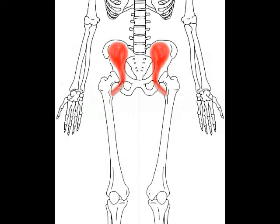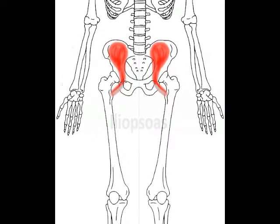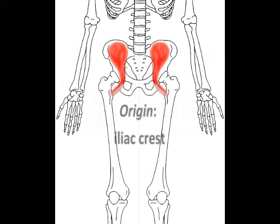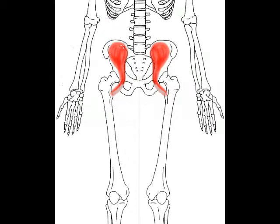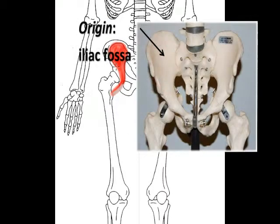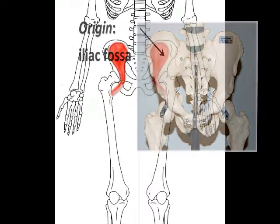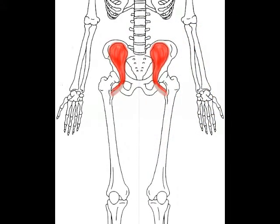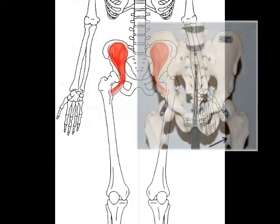The iliacus is also part of a muscle combo paired up with the psoas major into the iliopsoas muscle. The iliacus originates at the iliac crest of the pelvis as well as the upper two thirds of the iliac fossa, and also has an attachment at the anterior inferior iliac spine as well as part of the sacrum. Its insertion is onto the lesser trochanter of the femur.